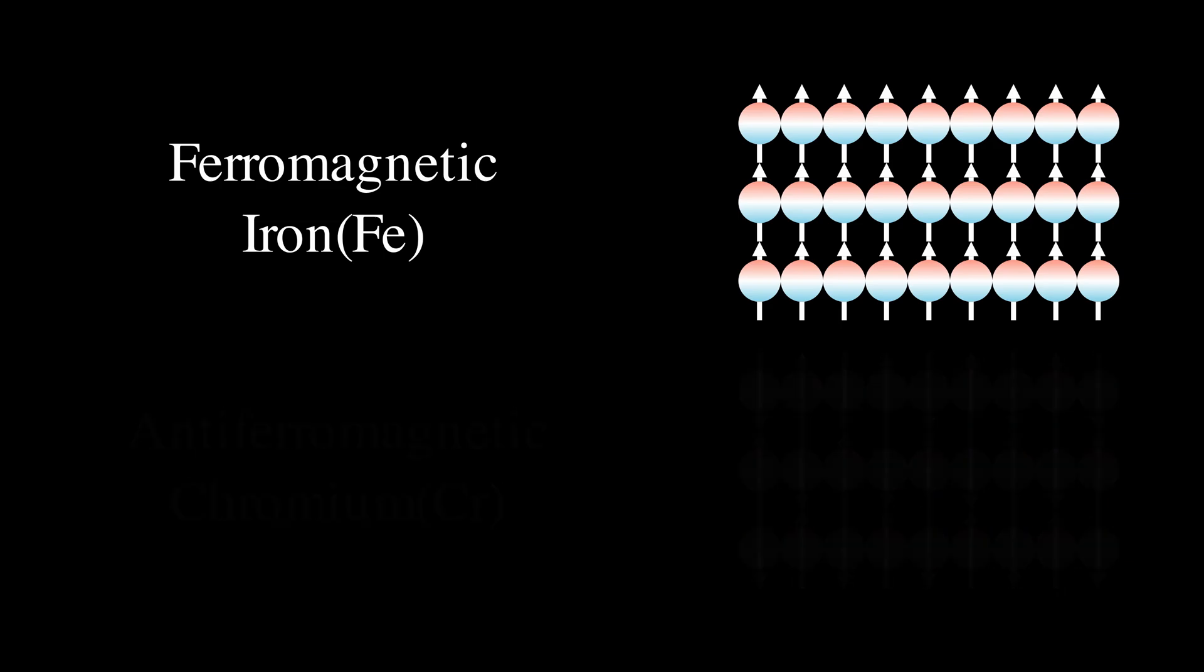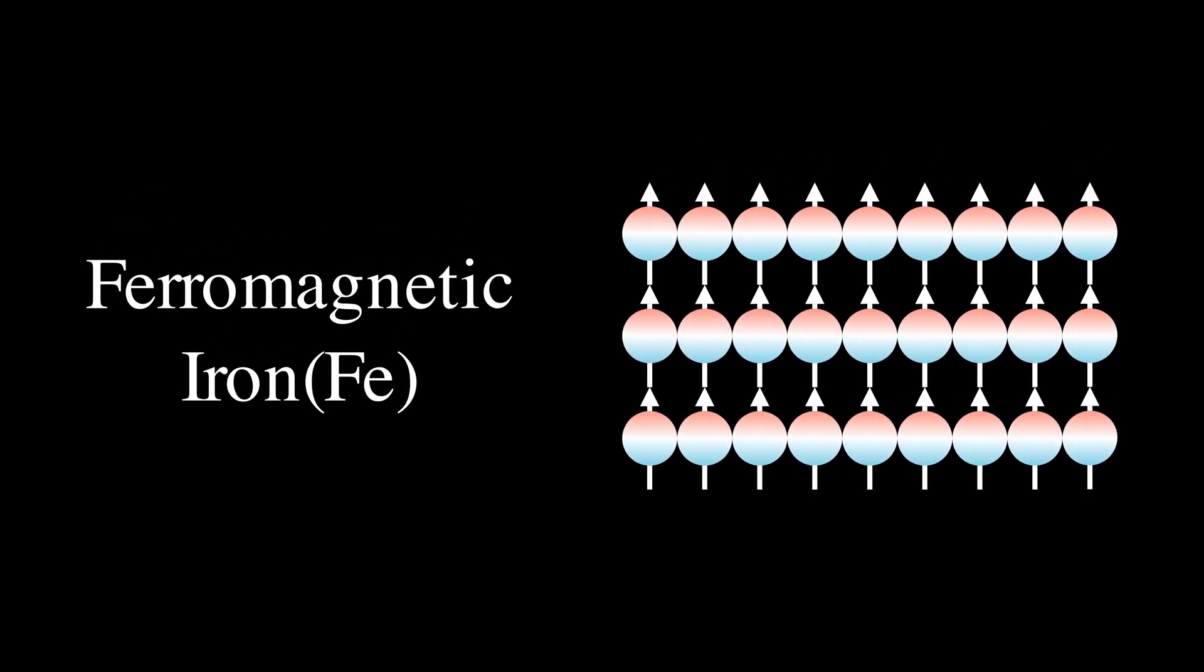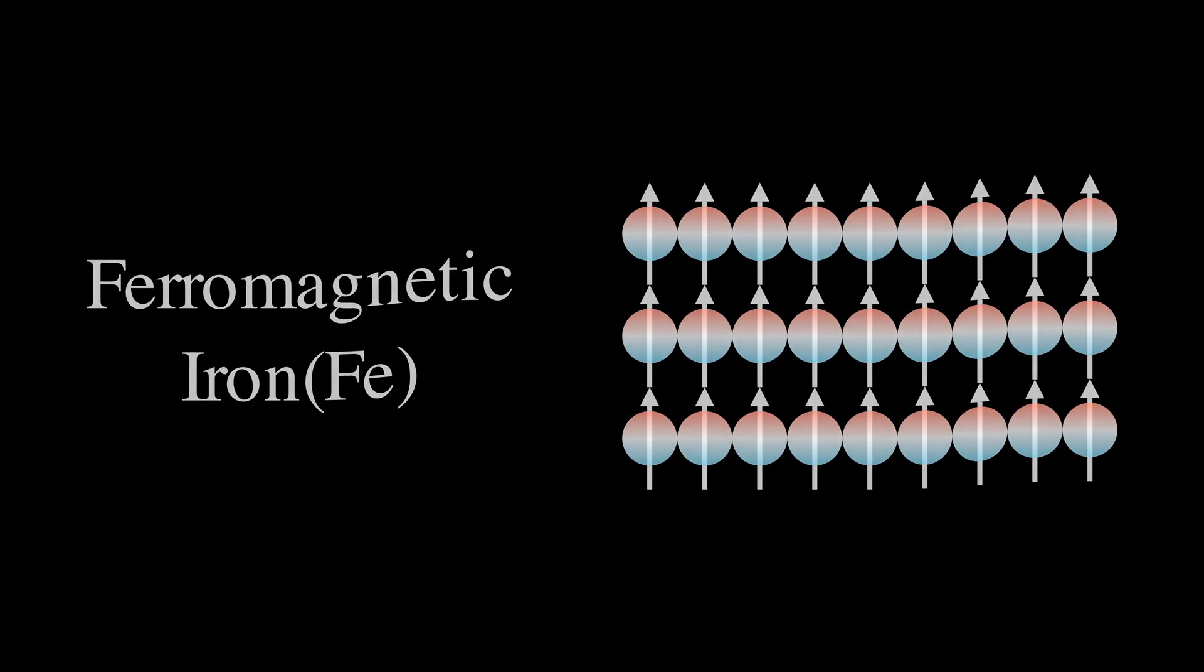That means iron should be magnetic, right? But again, that does not seem to be the case. If you pick up any random iron object, it does not behave like a magnet. Why? Hang on with me, we are almost there.